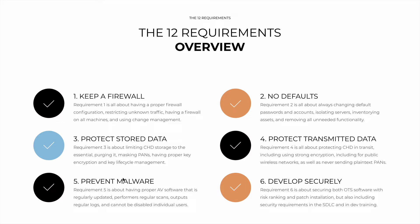Requirement 5, 'Prevent Malware,' is very simple: have proper antivirus software that is regularly updated, that performs regular scans, outputs regular logs, and cannot be disabled by individual users — through establishing a policy. If Requirement 5 is about protection from vulnerabilities that others cause, Requirement 6 is about protecting yourself from the vulnerabilities that you cause. It's about developing securely — and it's not just your own applications, but securing both off-the-shelf software and your own. Your developers need to be able to deal with code injections, buffer overflows, cross-site scripting, and more.